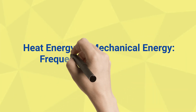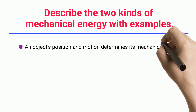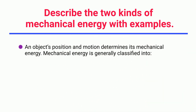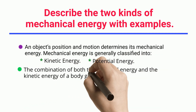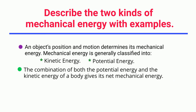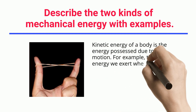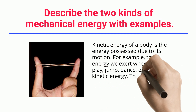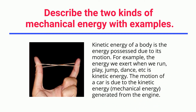Heat energy to mechanical energy — frequently asked questions. Describe the two kinds of mechanical energy with examples. An object's position and motion determines its mechanical energy. Mechanical energy is generally classified into kinetic energy and potential energy. The combination of both the potential energy and the kinetic energy of a body gives its net mechanical energy. Kinetic energy of a body is the energy possessed due to its motion — for example, the energy we exert when we run, play, jump, dance, etc. The motion of a car is due to the kinetic energy, a form of mechanical energy, generated from the engine.